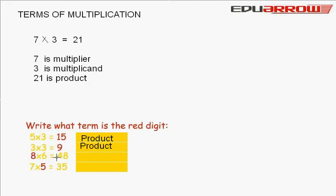Now, 8 multiplied by 6 is equal to 48. Here, 8 is the multiplier, so we write here multiplier.